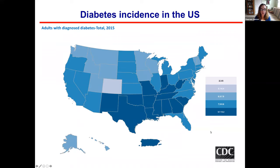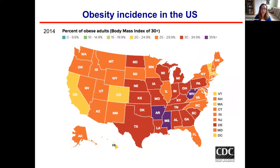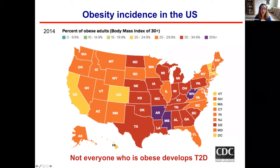I want to start with a slide from the CDC showing that the percentage of diabetes incidence has been increasing over the last couple of decades, and that this is really concentrated in the southern part of the US. This correlates with the incidence of obesity in the US. But one thing I want us to think about is that not everyone who is obese goes on to develop type 2 diabetes, and there are probably a variety of reasons for that.